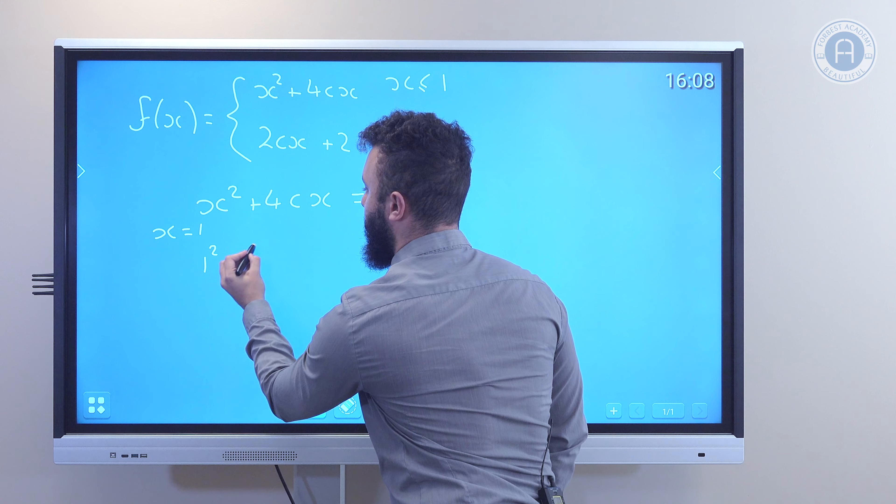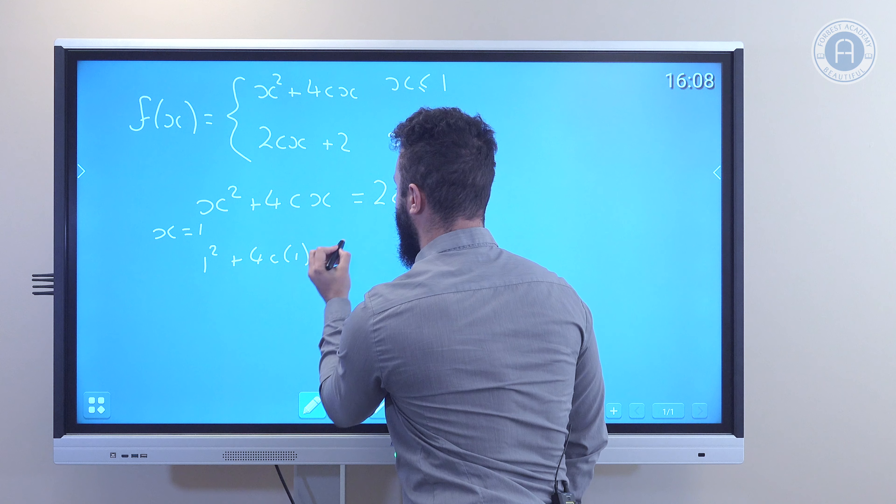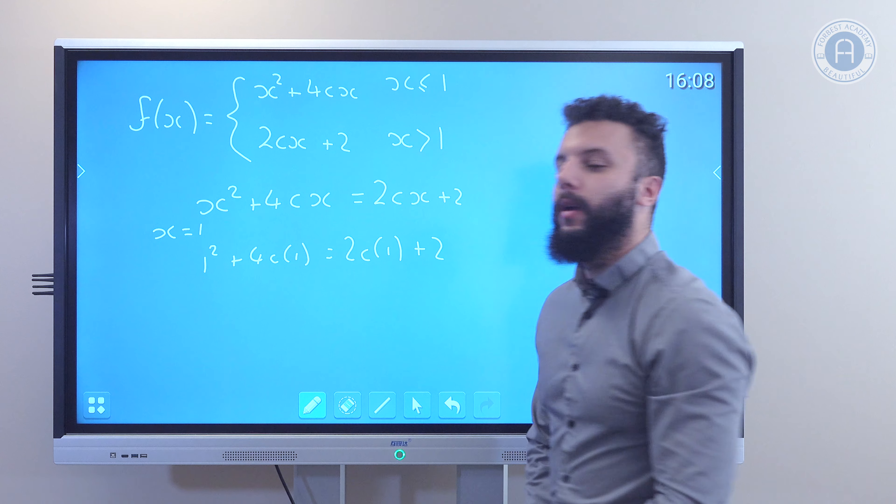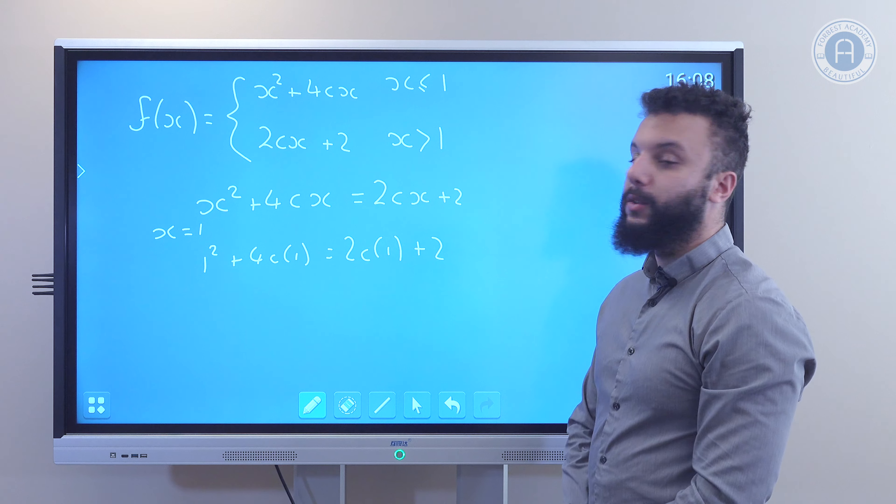Now we are looking for the value of the constant c which will make this graph continuous. For this graph to be continuous, at the point x equals 1, these two need to equal the same thing.